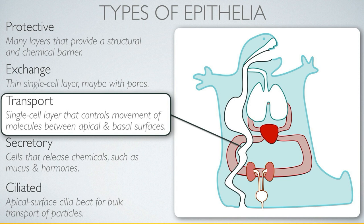The transport epithelia move glucose into the interstitial fluid where it can be absorbed by the circulatory system. Epithelial cells are typical in the balance of ions across their cellular membrane, and that difference in ion concentration across the membrane turns out to be really important to this transport story.